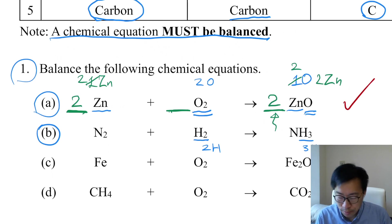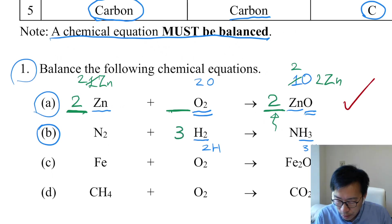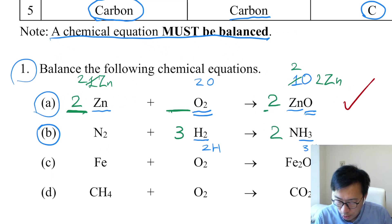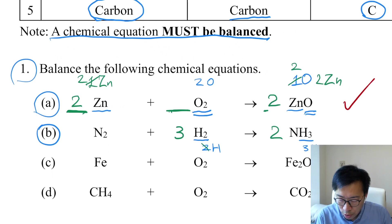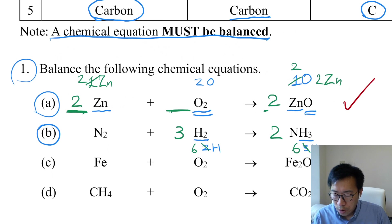We have to balance the number of hydrogen atoms. You have to put the 3 here and the 2 here. By doing this, you multiply H2 by 3, giving 6 H atoms on the left. After putting the 2 before ammonia NH3 on the right-hand side, 2 times 3 equals 6, so you also get 6 H atoms on the right. The number of H atoms is balanced.